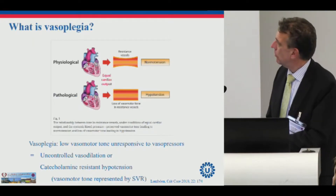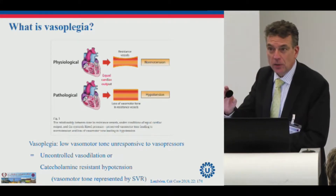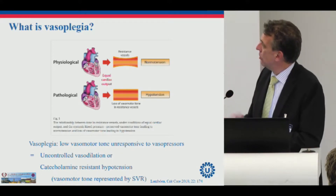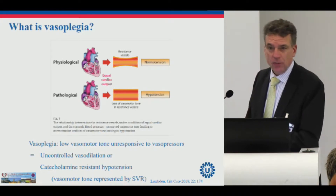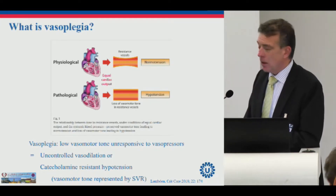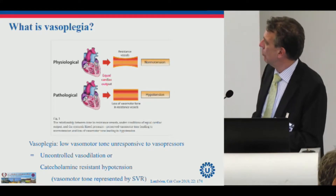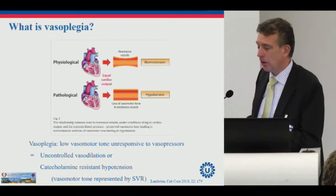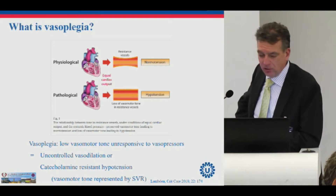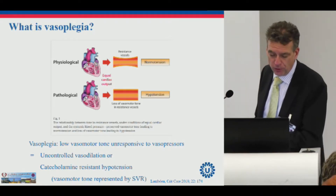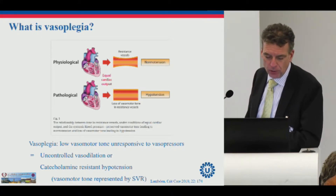So what is Vasoplegias? Normally, physiologically seen, we have resistance in our vessels, and that means that we have some blood pressure. But pathologically seen, what is Vasoplegias? We have a loss of vasomotortone in the resistance vessels, and we have hypotension. So Vasoplegias is a low vasomotortone, unresponsive to vasopressors, or uncontrolled vasodilation, or catecholamine-resistant hypotension.